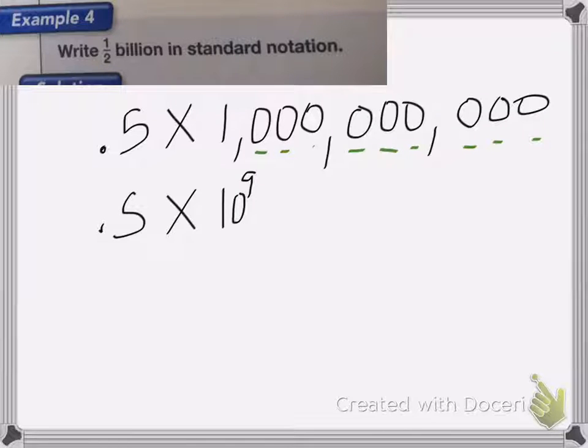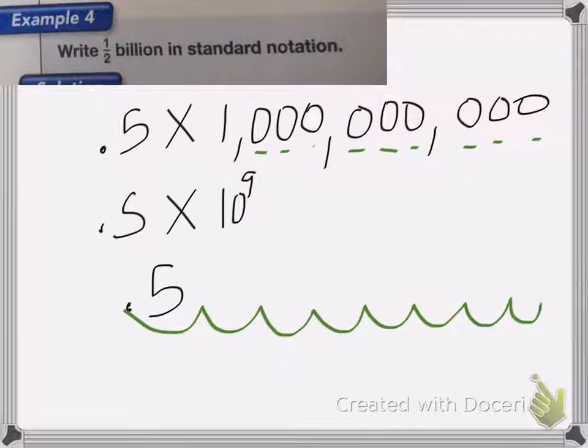So in this case, it tells me how many places I need to move it. So it's going to be 0.5 and I need to move it 9 places: 1, 2, 3, 4, 5, 6, 7, 8, 9. Fill in my zeros.